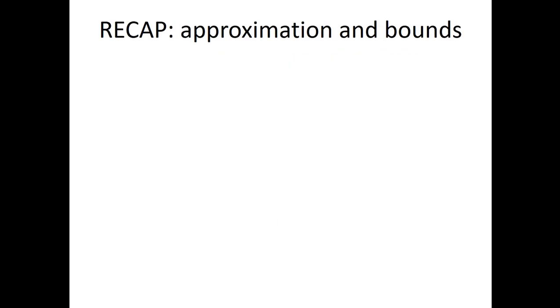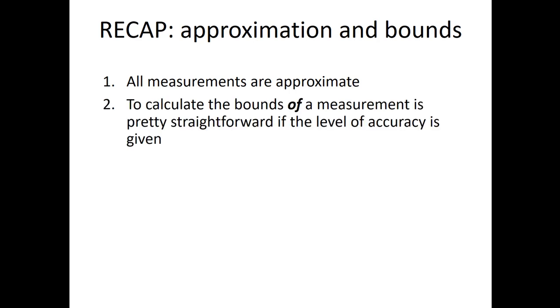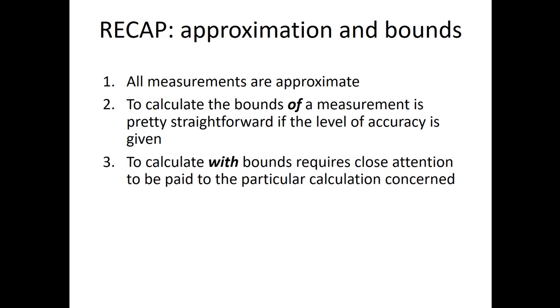So to recap, approximation and bounds. That's what today's session was all about. One, all measurements are approximate. They are never exact. Be wary of anyone who tells you they are. Number two, to calculate the bounds of a measurement is really very straightforward if you know the level of accuracy. If not, you simply have to infer it from the number you're given. If somebody says the distance is 212 metres, the only safe assumption to make is that is given to the nearest metre. And finally, to calculate with bounds requires a good bit of attention to be paid to the particular calculation concerned.